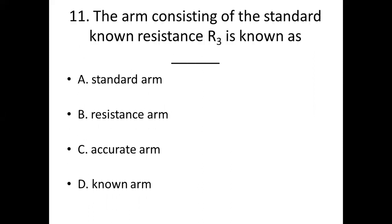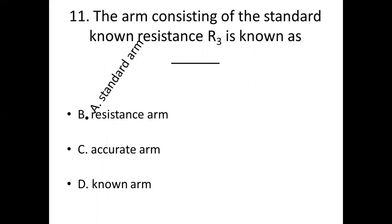Eleventh bit. The arm consisting of the standard known resistance R3 is known as dash. Option A: standard arm. Option B: resistance arm. Option C: accurate arm. Option D: known arm. Answer: Option A, standard arm.